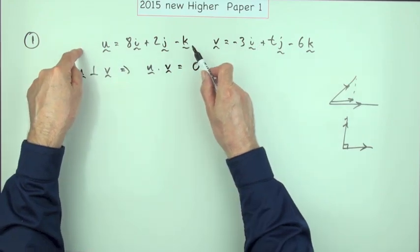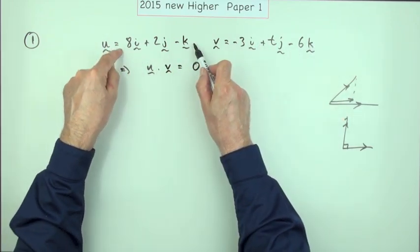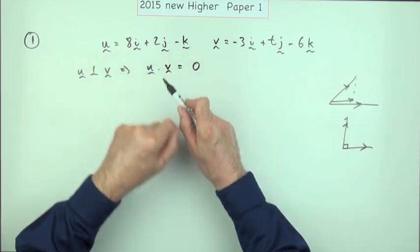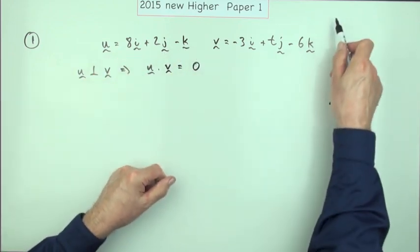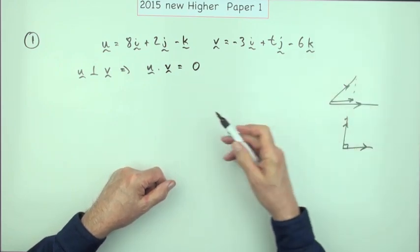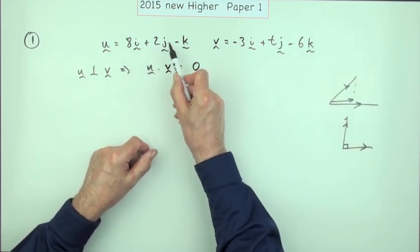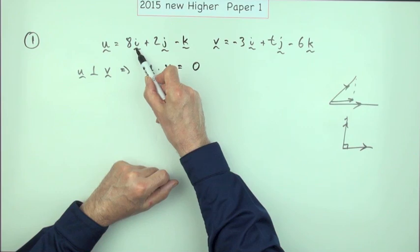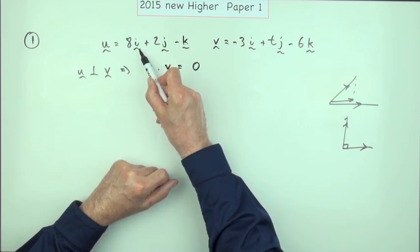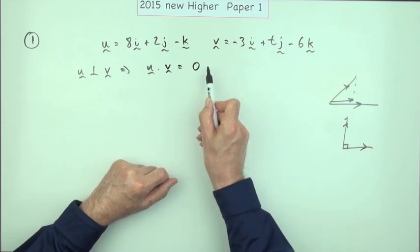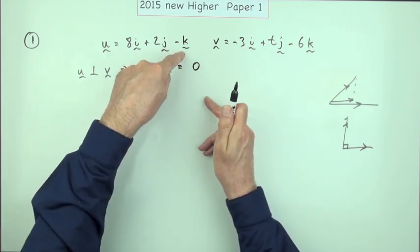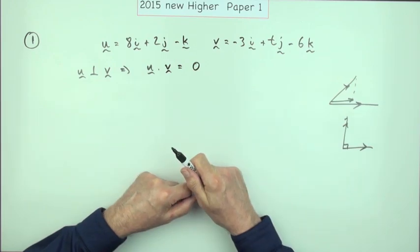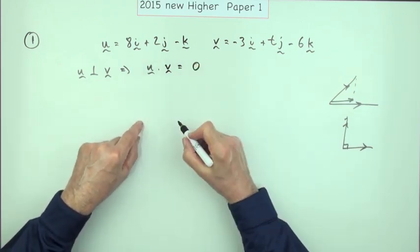Now here you have the vectors as multiples of the base unit vectors. There's no need to write them out in component form because the numbers are clearly there in front of you. Remember, i stands for one step in the x direction, j stands for one step in the y direction, k stands for one step up in the z direction.